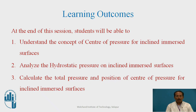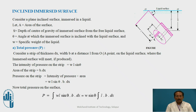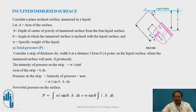The position of center of pressure — that is the h-bar — that we are going to calculate. The inclined immersed surface is below the free water surface. This is x-bar: the center of gravity is x-bar below the free water surface, and h-bar is the center of pressure which is acting below the water surface.